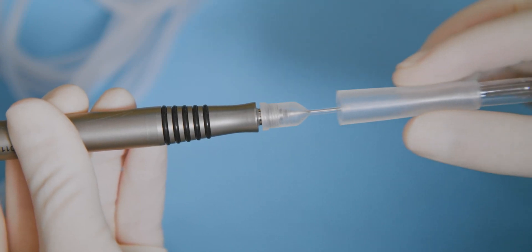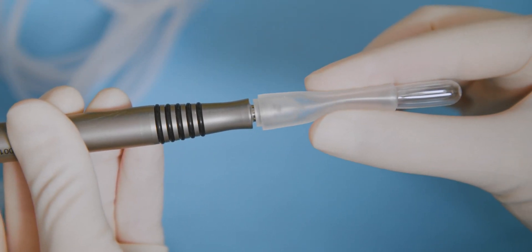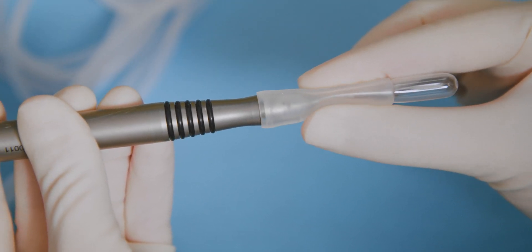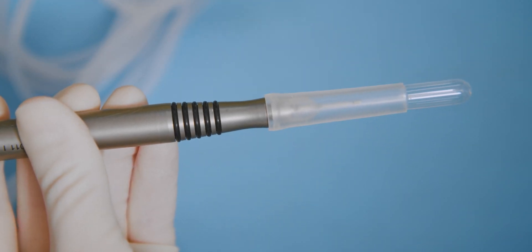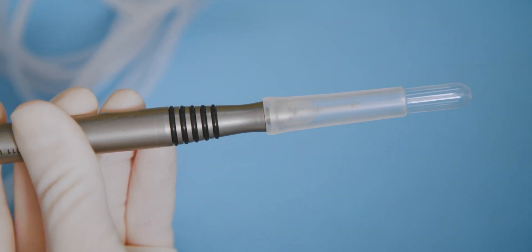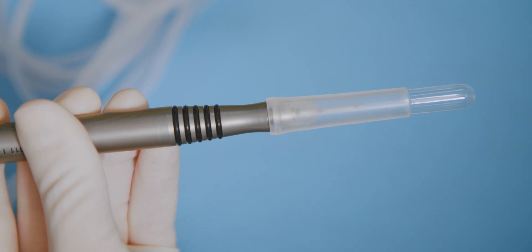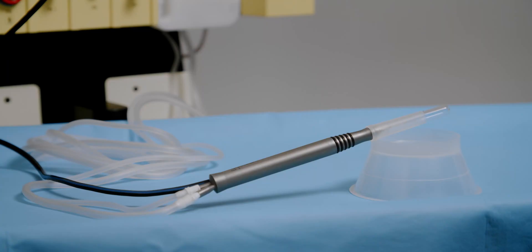Now attach the test chamber. Push the sterile test chamber over the FACO tip and irrigation sleeve. Ensure the back end of the test chamber is flush with the irrigation sleeve. Place the handpiece at a 45 degree angle to ensure optimal priming.